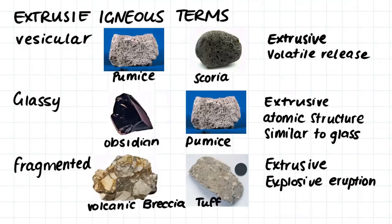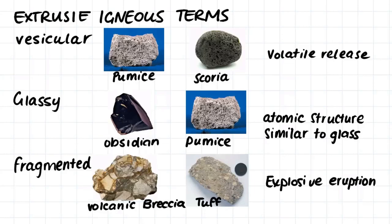We also have a few terms to describe some special extrusive igneous rocks. First, we have vesicular rocks, which includes rocks like pumice and scoria. These form because of a release of volatiles when the magma hits the Earth's surface. Then we have glassy rocks, which can either have a glassy finish or be vesicular, and these form because of very rapid cooling of the molten rock.